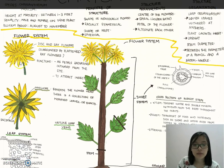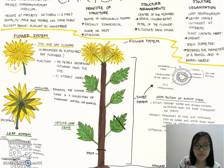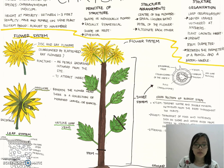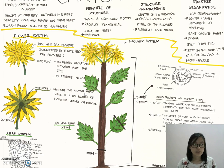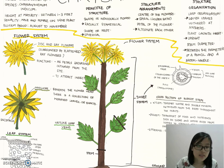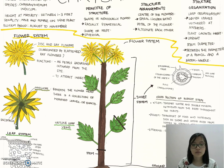Now for the flower system. These ray flowers, like common flowers, function as petals radiating outward from the eye and attract insects. For the involucre beneath the flower head, that is a collection of modified leaves or bracts which support the flower petals.